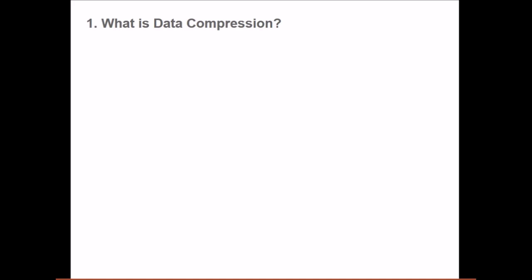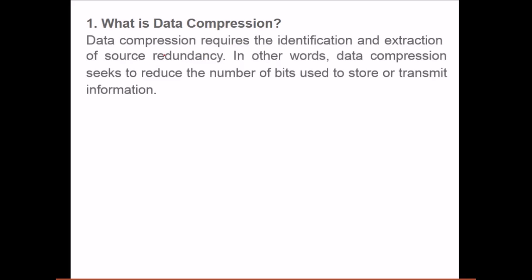Let us see a few questions in image compression of image processing. What is data compression? Data compression requires the identification and extraction of source redundancy. If redundancy is there, the data is duplicate, and if you can reduce this data without any loss of viewing or information, that's data compression. In other words, data compression seeks to reduce the number of bits used to store or transmit information.